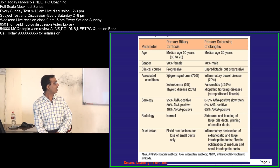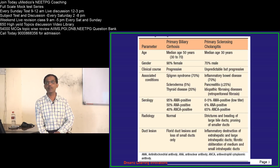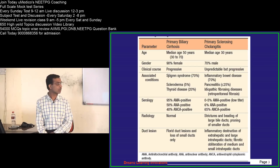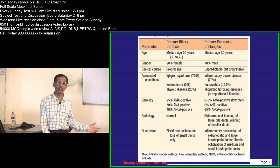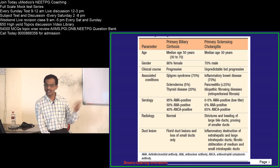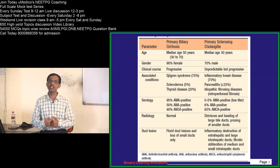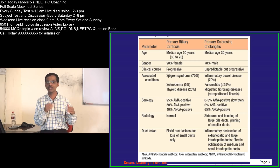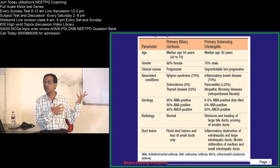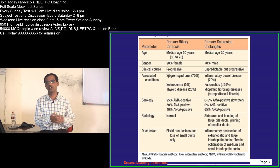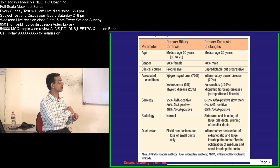In PSC, AMA is not present or present in very few cases — 0 to 5%. Only 6% of patients have antinuclear antibody, so ANA is not sensitive there either. 65% have ANCA, so among the available antibodies for primary sclerosing cholangitis, antineutrophil cytoplasmic antibody is relatively more sensitive — though still not very sensitive, as we can miss 35% of cases.